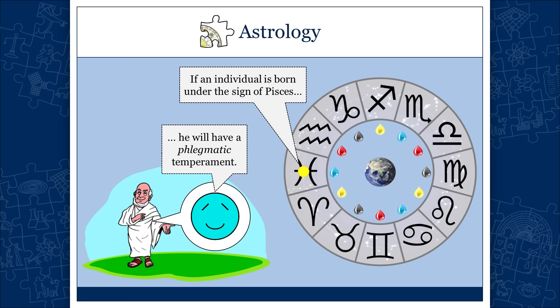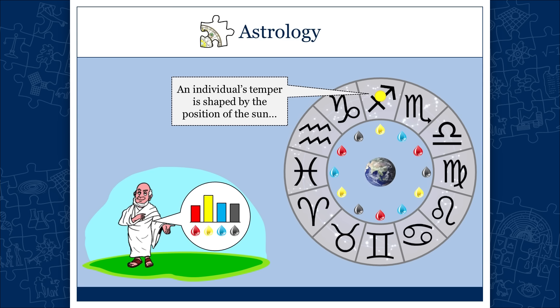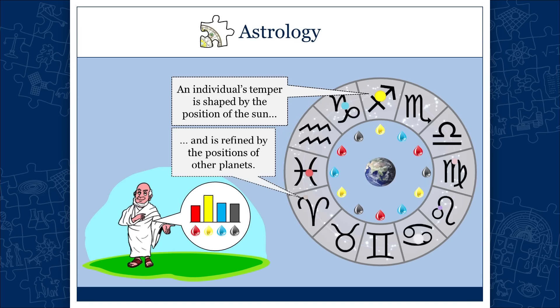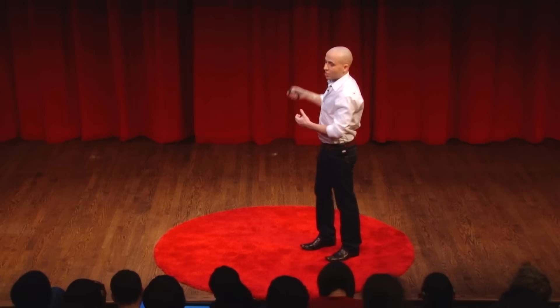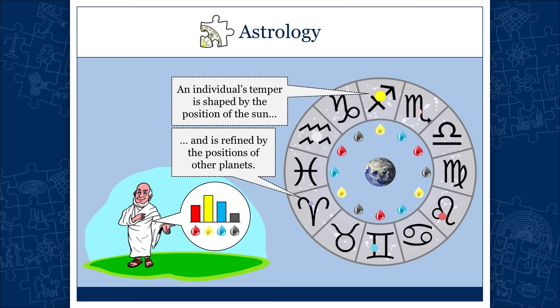An individual's temper is shaped by the position of the sun, which determines your predominant humor, and is refined by the positions of other planets. Two different Sagittarians would both be choleric by virtue of their sun sign, but the balance of other humors would be decided by other planets. An individual's temper is determined by the specific placement of the planets at the moment of birth.